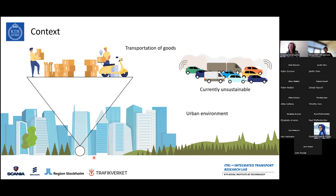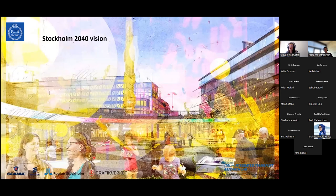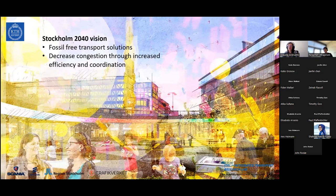Many cities in Europe and all over the world have different visions of how a city would look like. I'm based in Stockholm, and the vision of Stockholm for 2040 is to have fossil-free transport solutions and a decrease in congestion. They envision this to be achieved through increased efficiency and increased coordination — goals from the public sector perspective to decrease emissions and congestion.